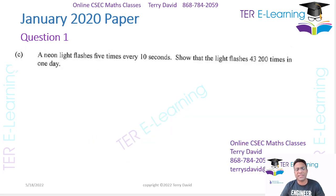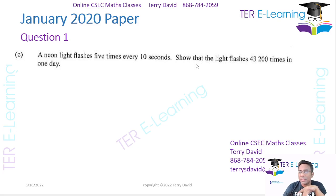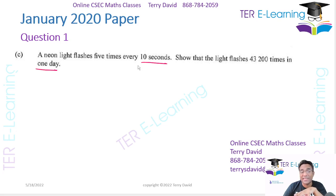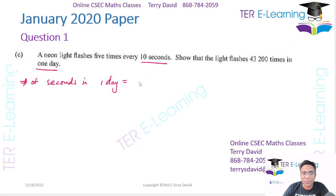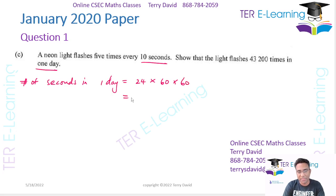Part C: a neon light flashes five times every 10 seconds. Show that the light flashes 43,200 times in one day. Since it flashes every 10 seconds, we need to figure out how many seconds are in one day. We have 24 hours, multiplied by 60 minutes per hour, multiplied by 60 seconds per minute — that gives us 86,400 seconds in one day.